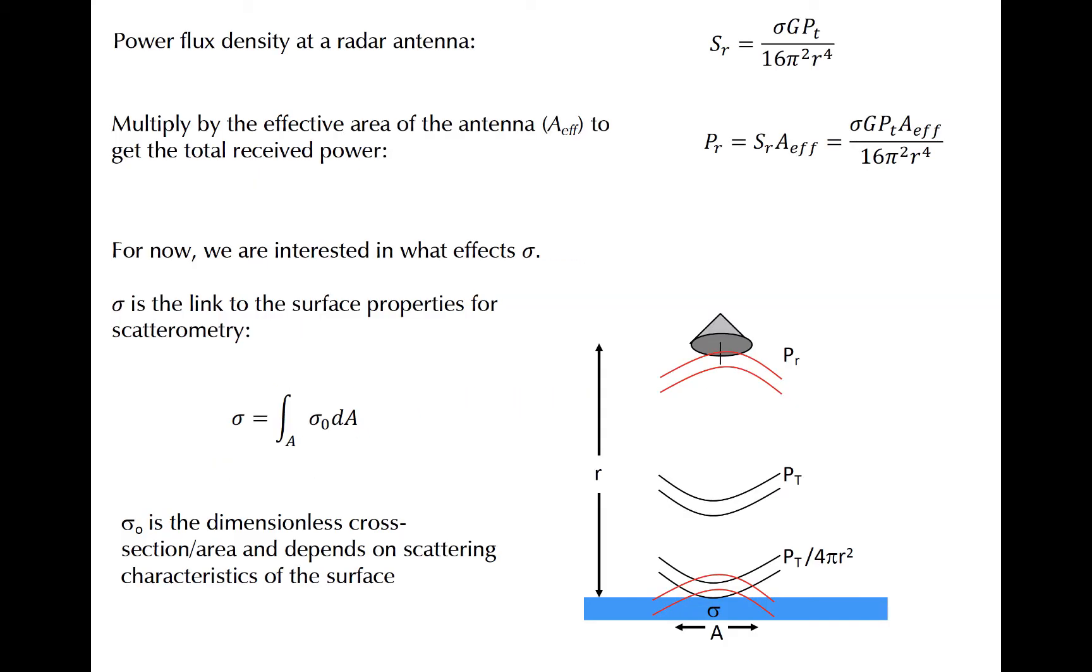First, we want to define a quantity called the scattering cross-section, which is the sigma. At bottom right is a diagram containing a scatterometer at top. As we will discuss soon, the instrument would likely not scan straight down, but this is just for illustrative purposes of the scattering cross-section. The signal transmitted is represented by the concave up black lines, and the P_T is the transmitted power.